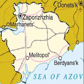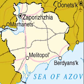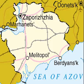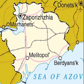This is a map of Zaporizhia, Ukraine. Zaporizhia Oblast, also referred to as Zaporizhia, is an oblast of Southeast Ukraine. Its capital is Zaporizhia. The oblast covers an area of 27,183 km². Important cities include Berdyansk, Enerhodar — home of the Zaporizhia nuclear power plant — Melitopol, and Zaporizhia.